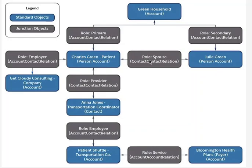The junction object is the raw contact relationship. Over here, account contact relationship.